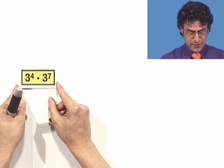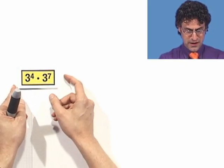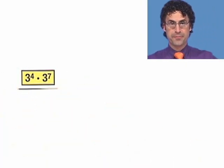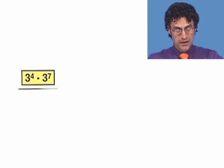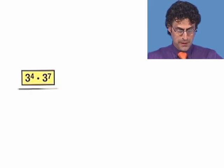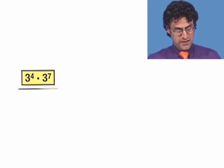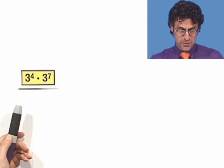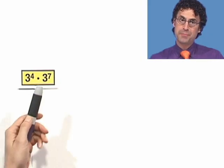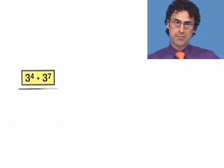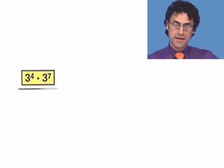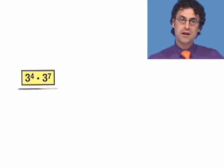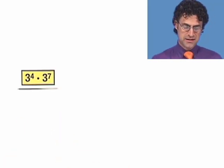Let's multiply 3 to the 4th by 3 to the 7th. The base of the first number is 3 and the exponent is 4. The base of the second number is 3 and the exponent is 7. Notice that these two numbers are being multiplied together and they share the same base.